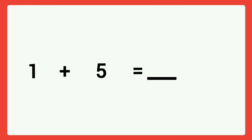Next, horizontal addition. Here numbers are written row-wise, meaning in a sleeping line. Then one plus five is equal to dash. Here we can use our finger addition. Another method is keep five in your mind, then take one finger. Five plus one is equal to six. The answer is six.